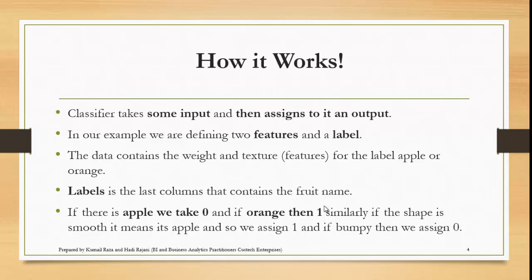What the machine does is it takes some input and assigns an output. For example, the input could be weight, texture, and color, and based on these it assigns a value — whether it's an orange or an apple. In our example we have taken only two features and a label. The label is the predicted value — the dependent value. The two features are weight and texture. If there is an apple we take zero, and if there is an orange we take one.